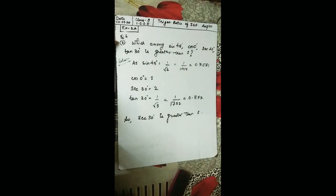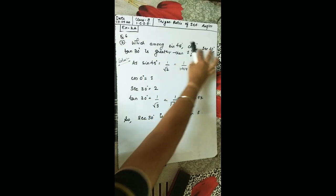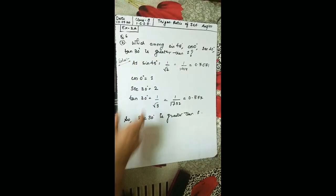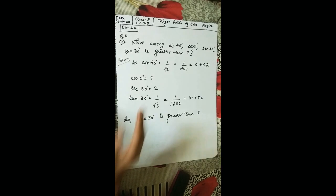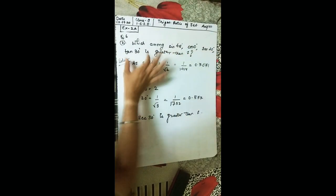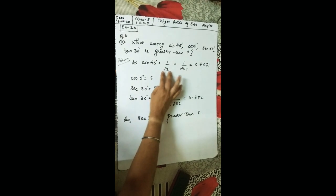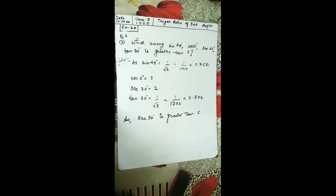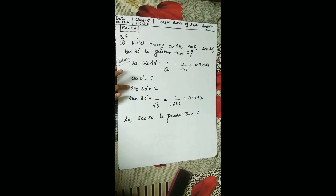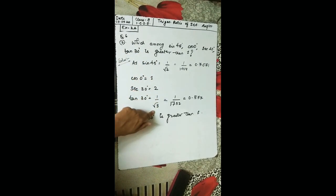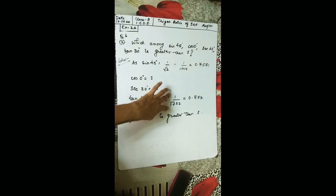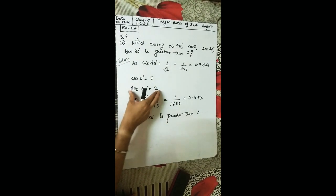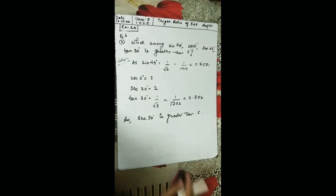Question 6B: which among sin 45°, cos 0°, sec 30°, tan 30° is greater than one? Let's write all the values: sin 45° = 1/√2 ≈ 0.707, cos 0° = 1, sec 30° = 2, tan 30° = 1/√3 ≈ 0.577. So sec 30° = 2 is the only one greater than one.